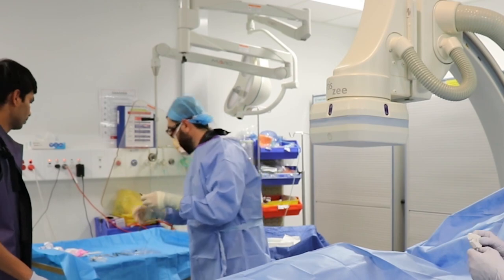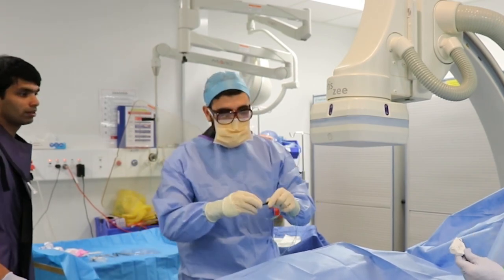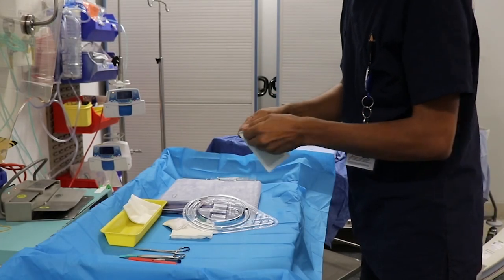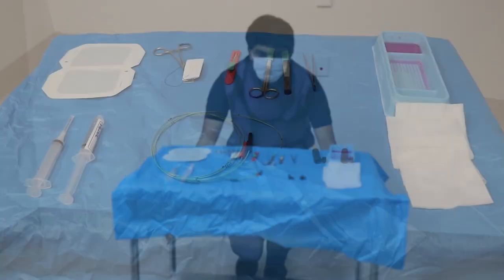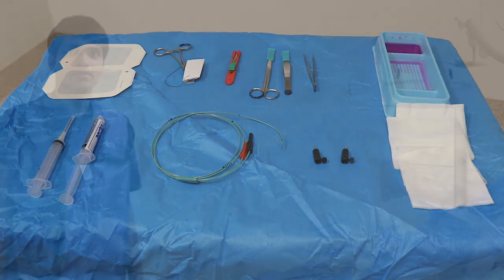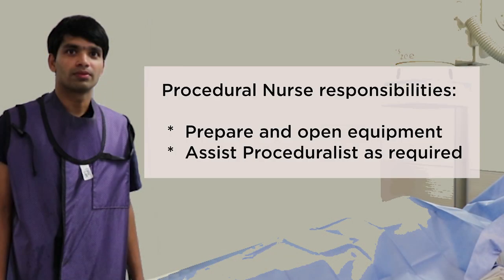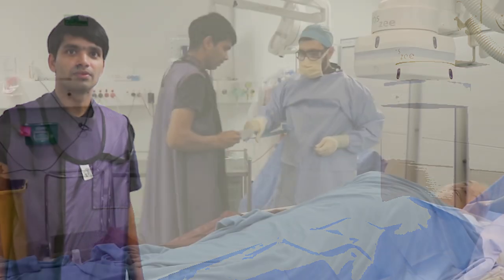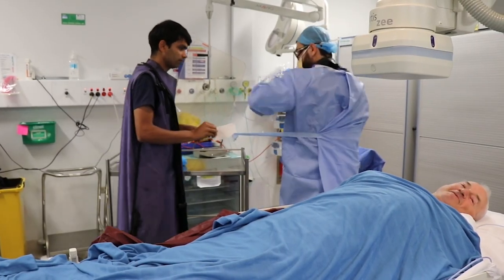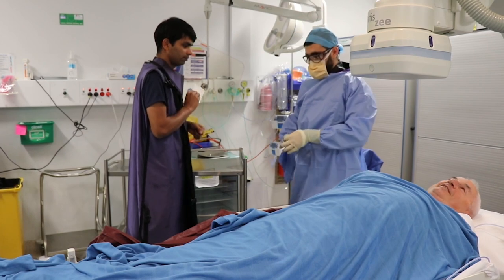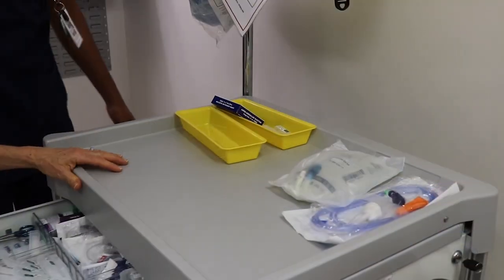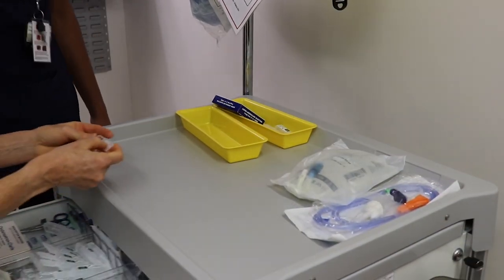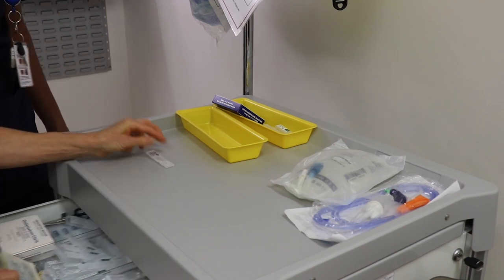To reduce the risk of infection, temporary pacing wires must be inserted using a sterile technique. The procedural nurse's responsibility is to set up the sterile field and then open any requested equipment by the proceduralist. The procedural nurse will open the packs of the sterile gown and gloves for the medical officer and assist with gowning and gloving as necessary. This role also involves assisting in the drawing up of medications as required.